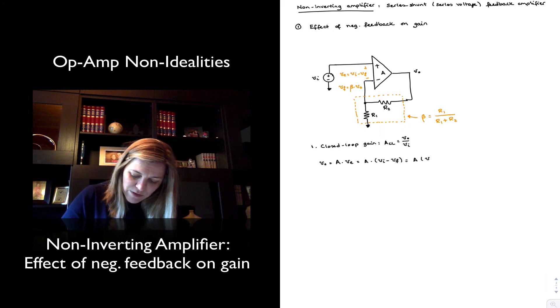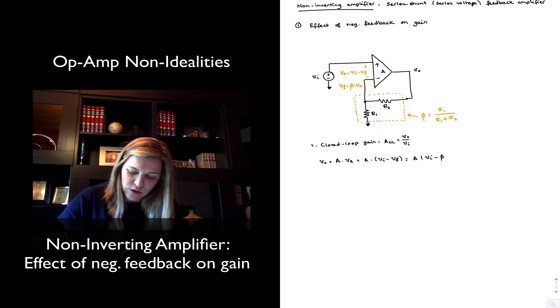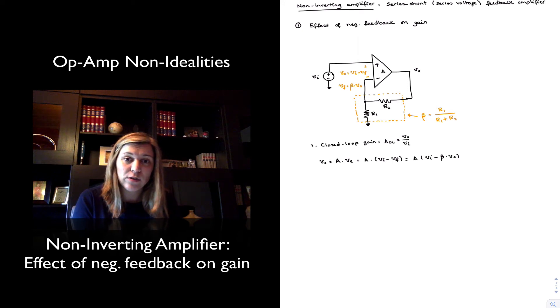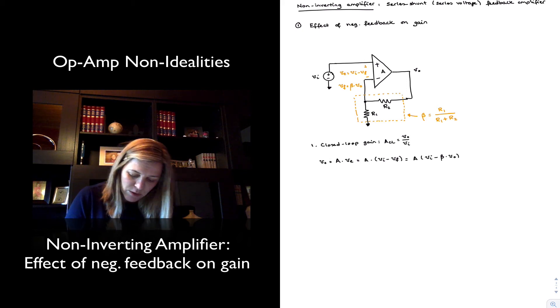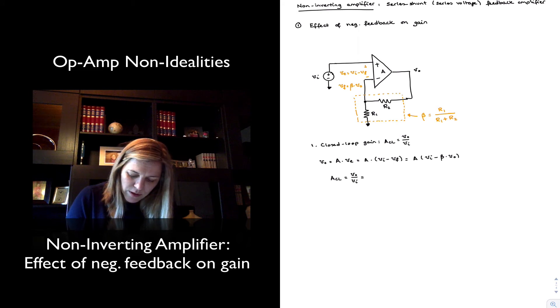I can express my feedback voltage as beta times the output voltage, beta times Vout. So now I have an equation in terms of Vout and Vin. I can put together all the Vout terms on one side of the equation, all the Vin terms on the other side of the equation, and come up with an expression for ACL as I did previously, Vout over Vin.